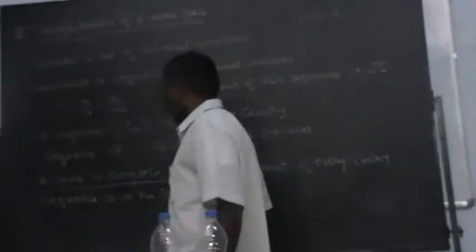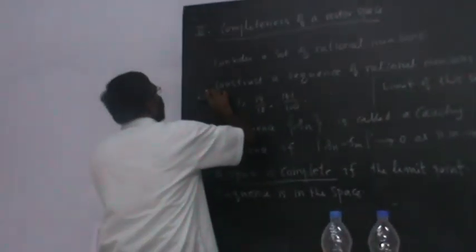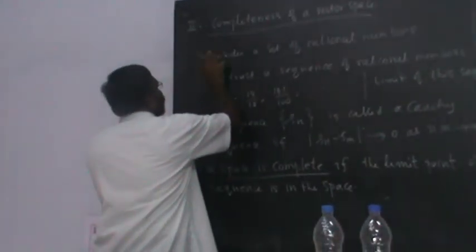So in that sense, a linear space is complete when the limit point of every Cauchy sequence is within the space.